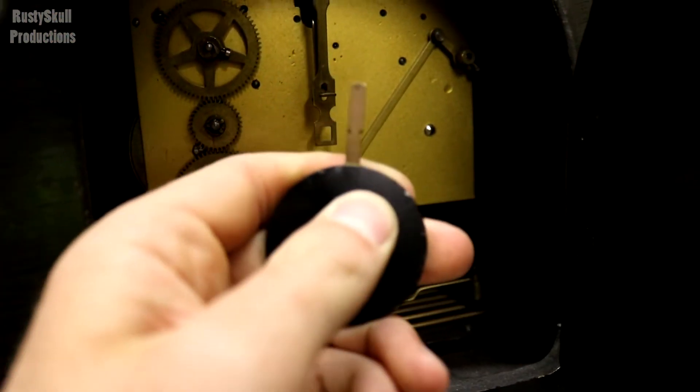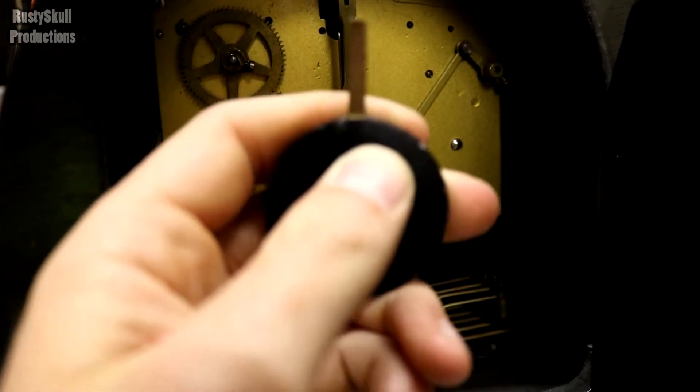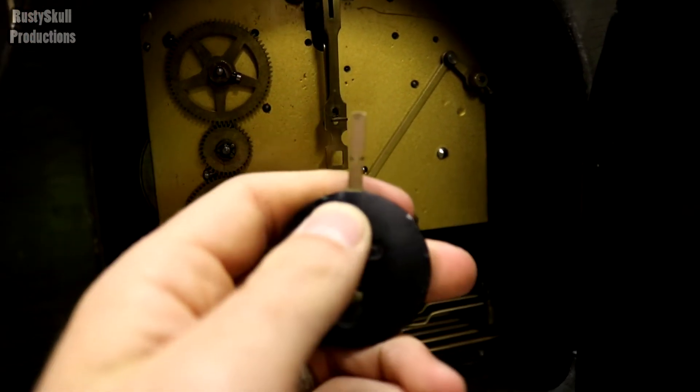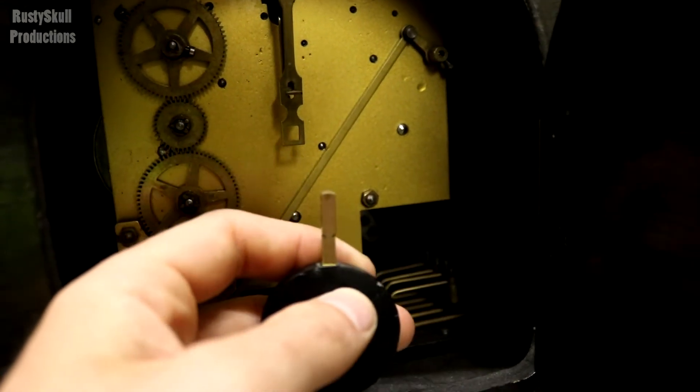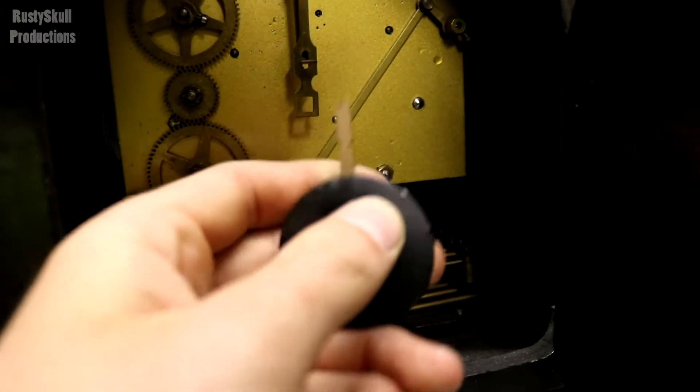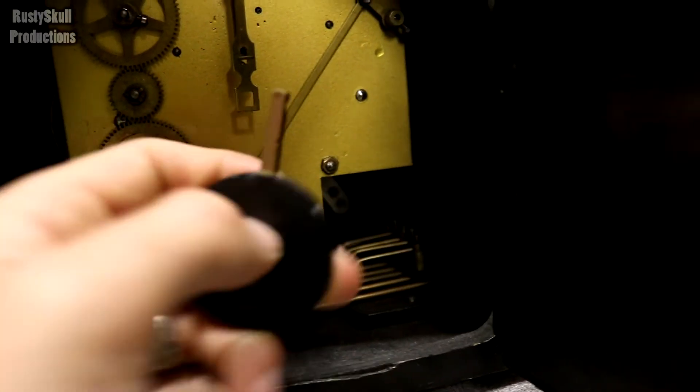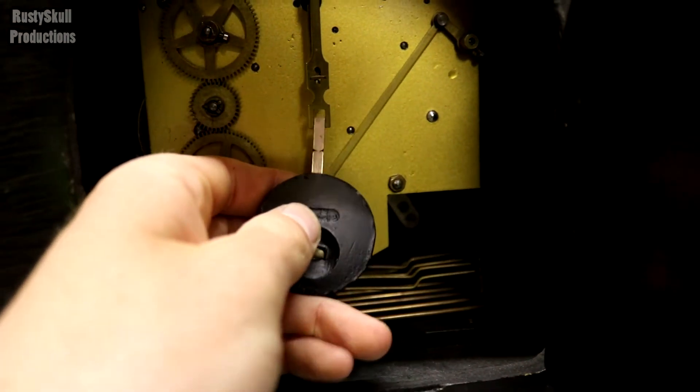The higher the pendulum is, the faster it will tick, and the faster the time will go. The lower it is down, so it's going to tick slower - well, I say it's going to swing slower - and therefore the time will go slower.